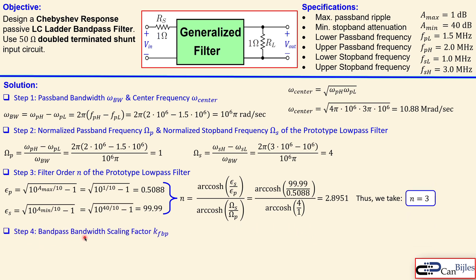Step 4 is the bandpass bandwidth scaling factor, KF_BP. That is equal to the bandwidth we have calculated: 10^6 π radians per second. This corresponds to 500 kHz, because the difference between 2 MHz and 1.5 MHz is 500 kHz.